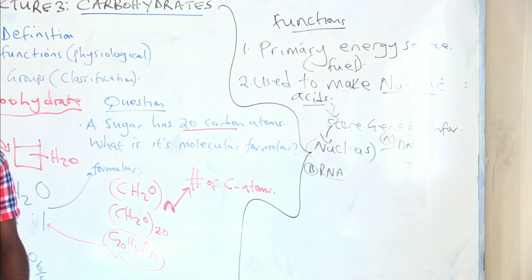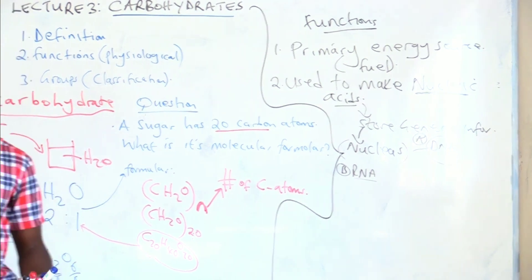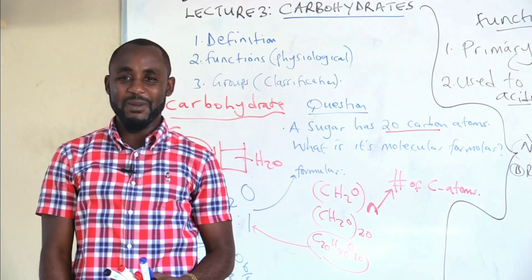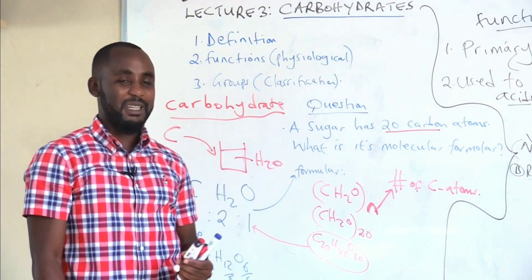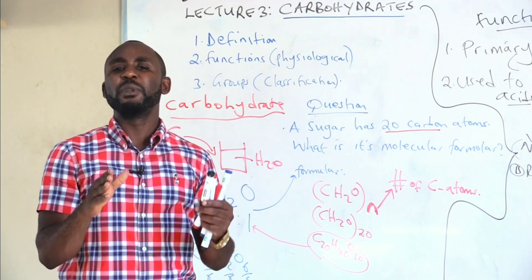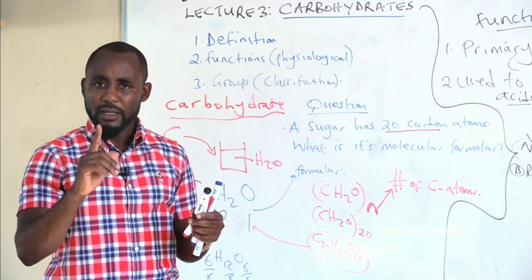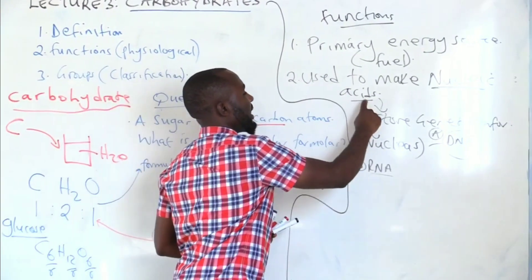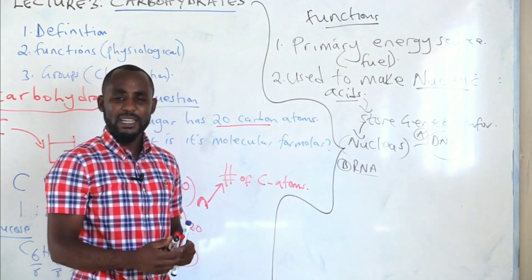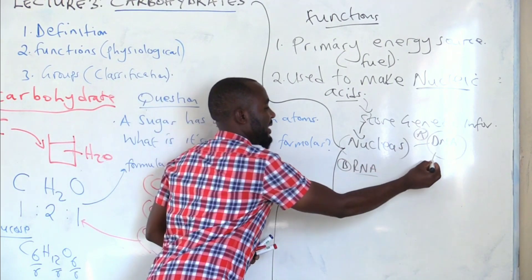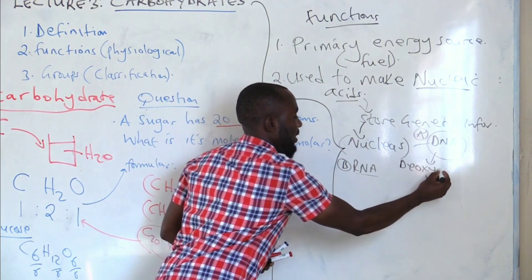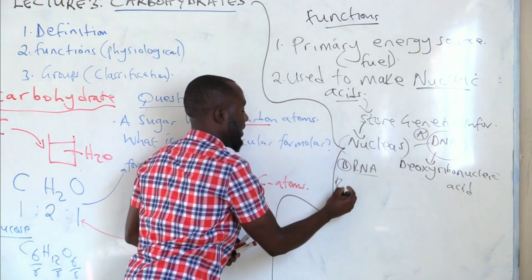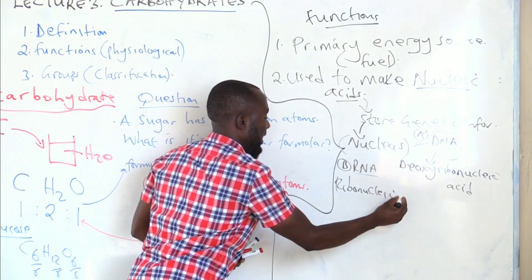The same nucleic acids determine the characteristics of an organism—genetical characteristics which makes me be either a male or female. Even the phenotype, the outward appearance of an organism, is determined by nucleic acids. We shall come to this topic and I will explain to you in details. For now, the take-home information about carbohydrates is that they are used to make nucleic acids.